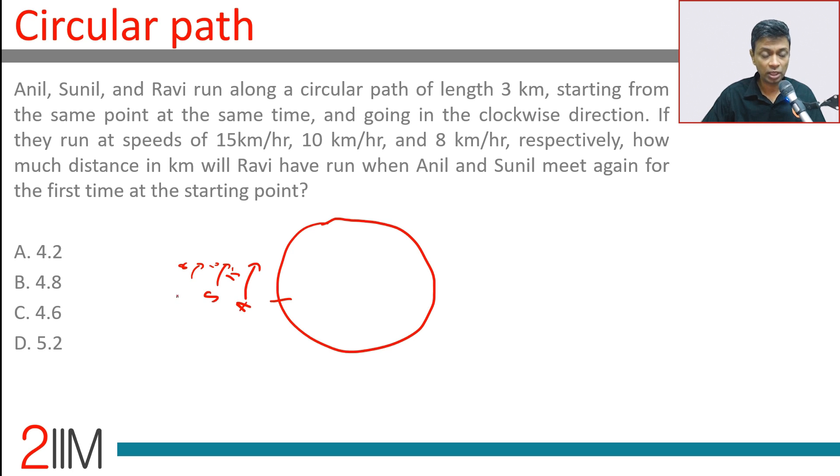Anil, Sunil, Ravi, 3 kilometer track. How much distance in kilometer will Ravi have run when Anil and Sunil meet again for the first time at the starting point?